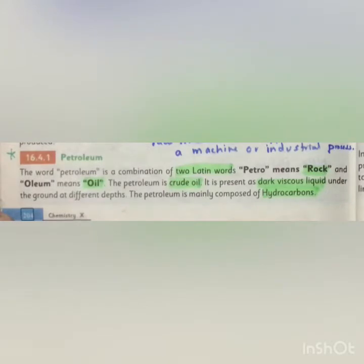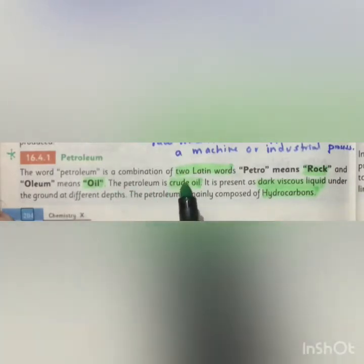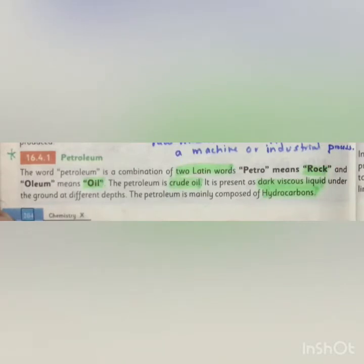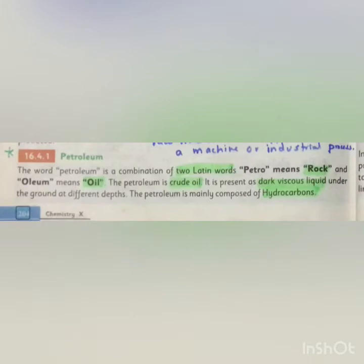What is petroleum? The word petroleum is a combination of two Latin words: 'petro' meaning rock, and 'oleum' meaning oil. Petroleum is crude oil — meaning it is not pure oil. It is present as a dark viscous liquid under the ground at different depths. Petroleum is mainly composed of hydrocarbons, that is, hydrogen and carbon — making it an organic compound.